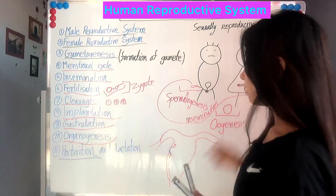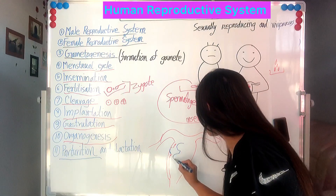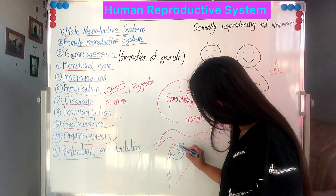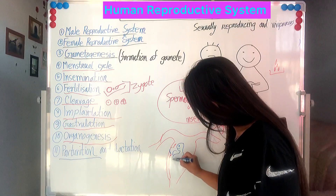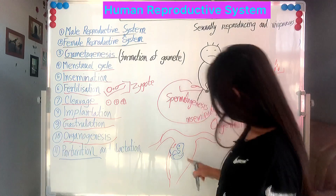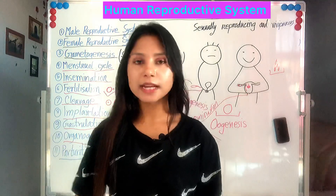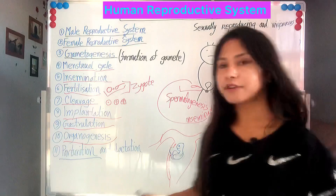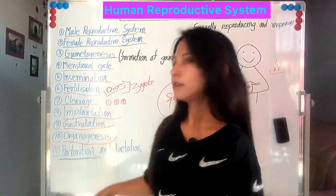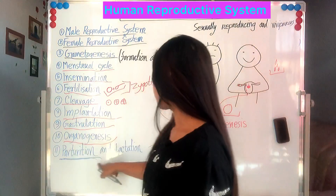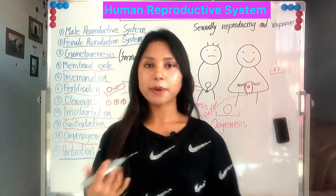After organogenesis, the baby will develop in the uterine cavity. This baby cannot stay in the uterine cavity forever — it needs to come out. This process of delivery of the baby is called parturition. Then there is lactation, which we will learn when we study the mammary gland.